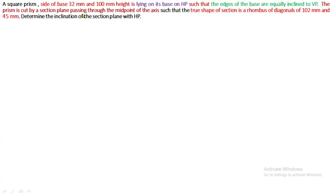The prism is cut by a section plane passing through the midpoint of the axis such that the true shape of section is a rhombus of diagonals of 102 mm and 45 mm. Determine the inclination of the section plane with VP.